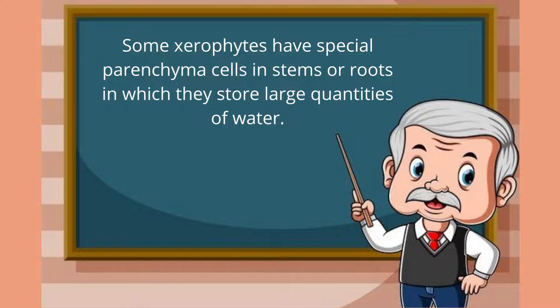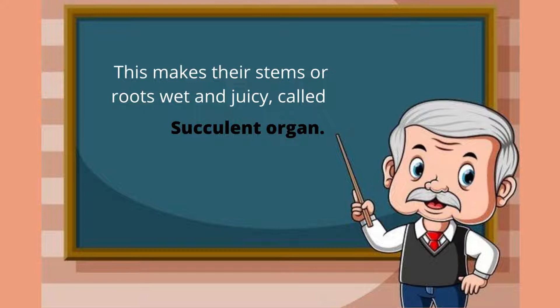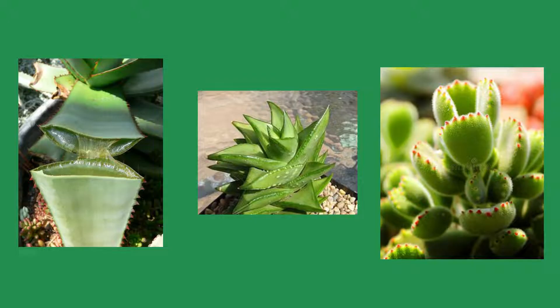Some xerophytes have special parenchyma cells in their stems or roots in which they store large quantities of water. This makes their stems and roots wet and juicy. These organs in which water is stored are called succulent organs.